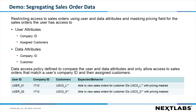In this example, we will show how DAE can be used to segregate sales order data in a joint venture. Specifically, we will be taking the user attributes of company ID as well as which customers are assigned to them, and then comparing those against the data attributes of company ID and the customer number. We have two users in this example. User 1 is a member of company 1710 and is assigned to all the customers that have an identifier of USCS_L. User 2 is in the same company but is assigned a different set of customers. Each user will be able to see the sales orders for their set of customers only. In addition, we are also going to be masking the net value of each sales order.